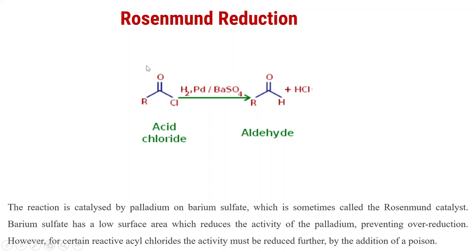For this oxygen not to be reduced, we take BaSO4 which acts as a poison here. BaSO4 is also a poison with lots of sulfur. The reaction is catalyzed by palladium on barium sulfate, which is sometimes called the Rosenmund catalyst. Barium sulfate has a low surface area which reduces the activity of the palladium. Palladium is a metal, porous in nature, and hydrogen gas is absorbed on the surface of the palladium. If you do not take BaSO4,